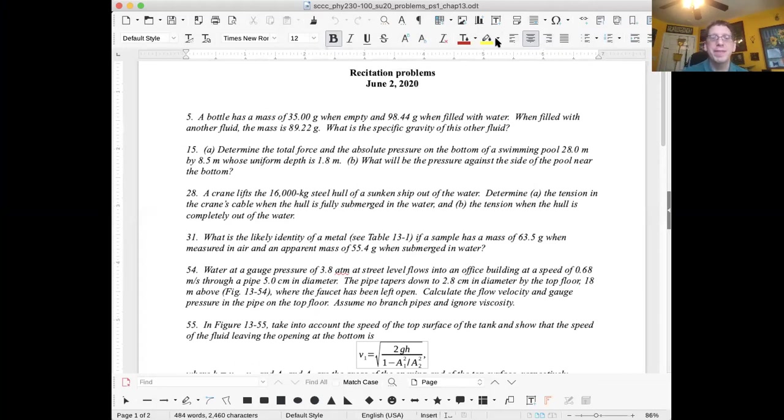For problem number five, a bottle has a mass of 35.00 grams when empty and 98.44 grams when filled with water. When filled with another fluid, the mass is 89.22 grams. What is the specific gravity of this other fluid? The specific gravity is the density in terms of grams per cubic centimeter. The density of water in grams per cubic centimeter, by definition, is one. We know the volume of the fluids is the same, so we can figure out the ratio of the masses of the two fluids, which would give us the ratio of the densities. That's how you would solve this problem.